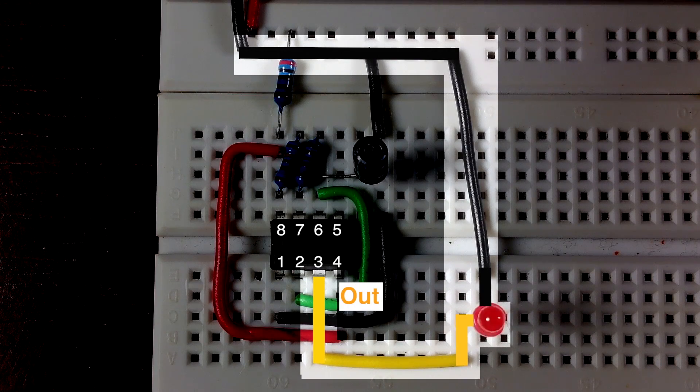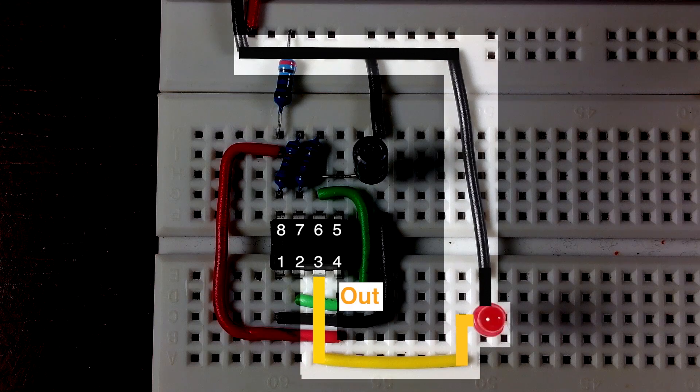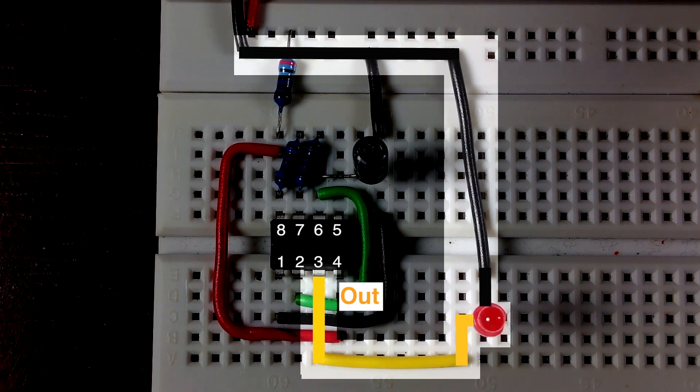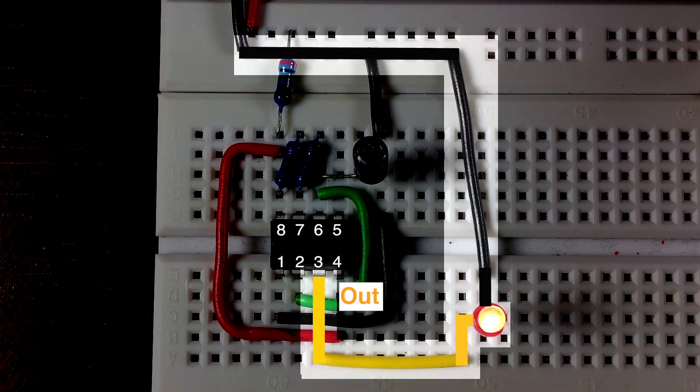Now let's connect an LED light to the output so that we can see it working. If you chose not to put a resistor going to the power source of the 555 timer, then you'll probably want to attach a resistor to the LED here.